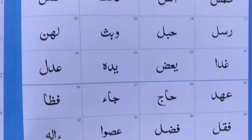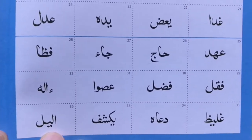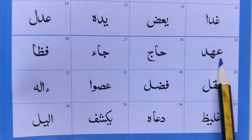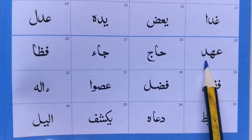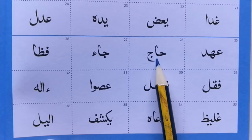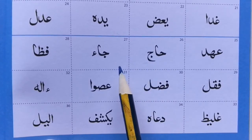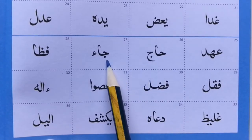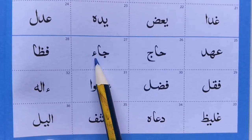Okay, next three lines on this page. Ayn, Ha, Daal. Ha, Alif. Jeeb. Jeeb, Alif, Hamza.